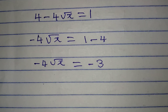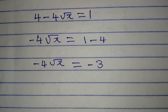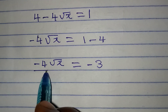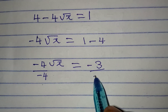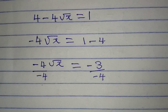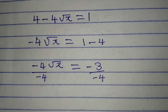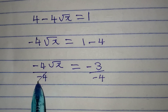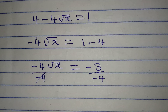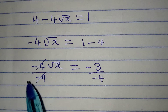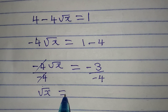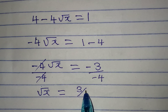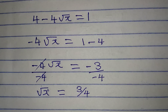The next thing I will do is divide both sides by minus 4. Minus 4 divided by minus 4 cancels, and we have root x equal to 3 over 4.